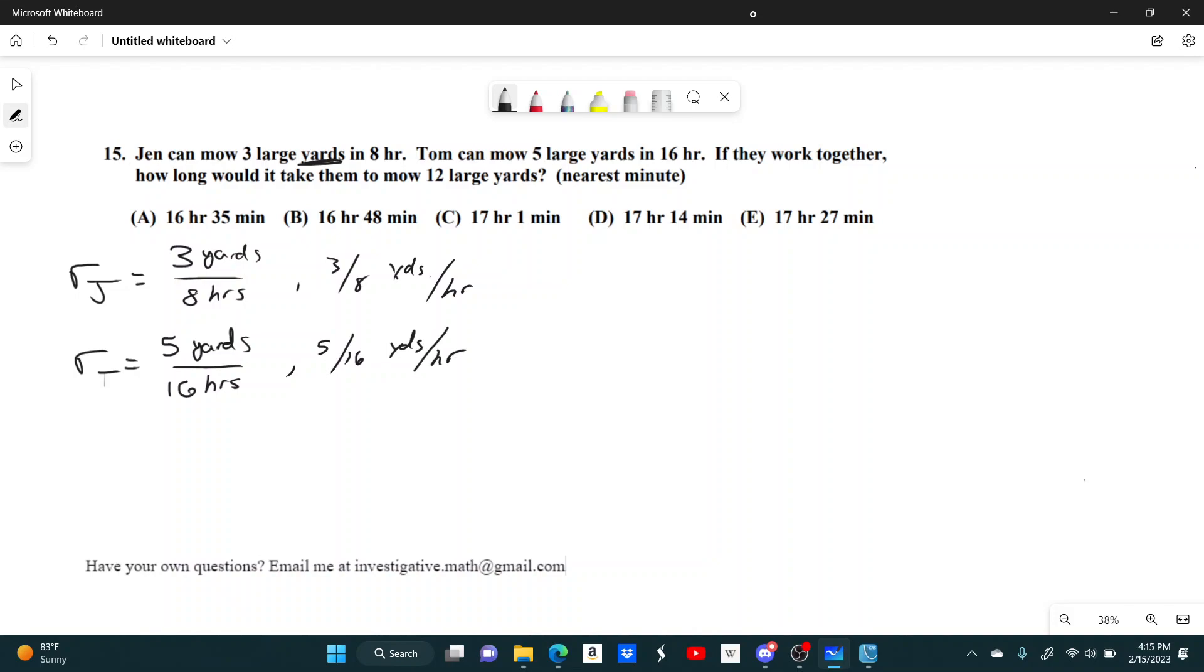Well, if they work together, their rates should combine. So working together, all you have to do to find their combined rate is add them. So the rate working together would be 3 eighths plus 5 sixteenths, which is 11 sixteenths yards per hour.